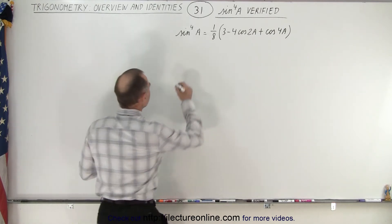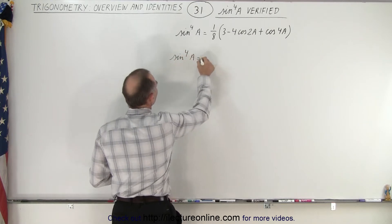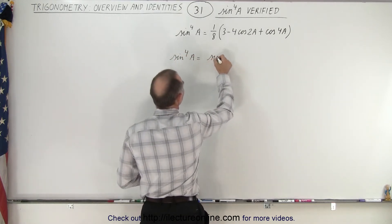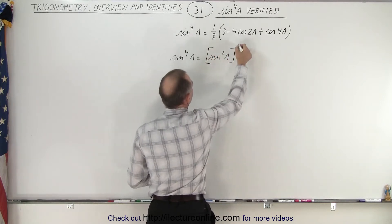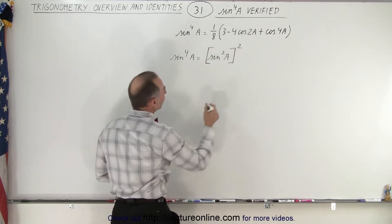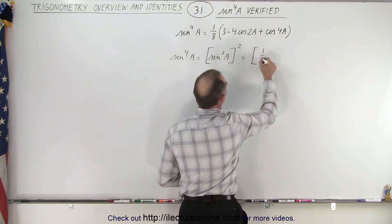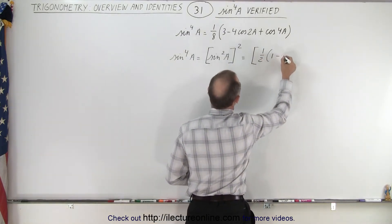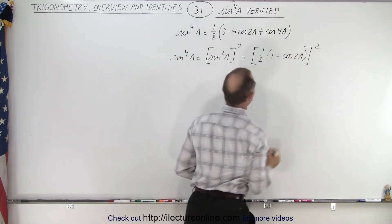Well, let's start with the following. How about if we write that the sine to the fourth power of a is equal to the sine squared of a quantity squared. And then we can say that each one of those can be rewritten as 1/2 times 1 minus the cosine of 2a, but the whole thing is still squared.